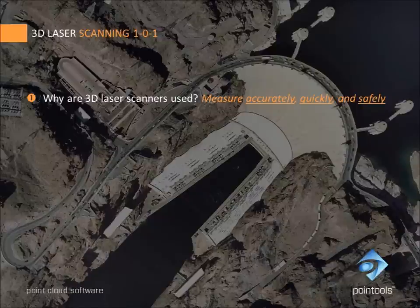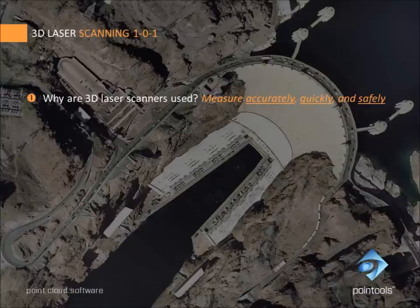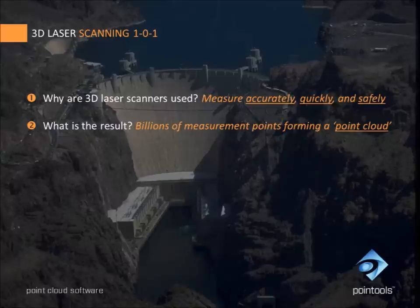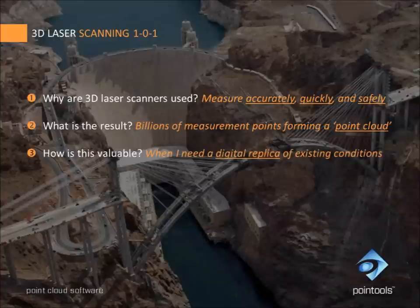3D laser scanning is used to accurately, quickly and safely measure something. Take the Hoover Dam — you're not going to measure that easily with a tape, and you're not going to measure it comprehensively with a total station. With a 3D laser scanner, you'll do both. The result is a 3D point cloud consisting of millions, sometimes billions of measurement points. 3D laser scanning provides by far the fastest route from reality to replica for planning, design and construction activities.